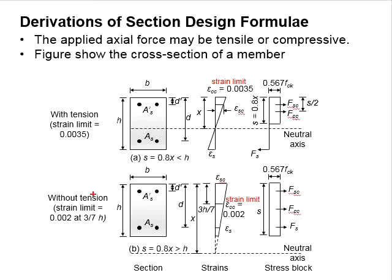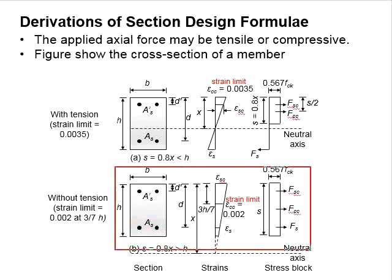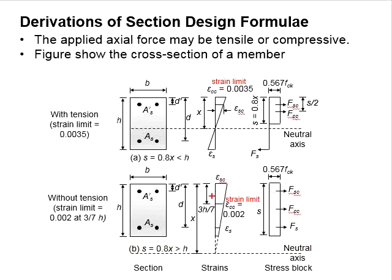For a column subjected to purely compression, the strain limit is determined at 3/7 h from the top of the column. The strain relationship is again linear. Based on this linear relationship, you can obtain the compressive strain and the strains in the steel bars. The compressive strain limit is determined as 0.002.